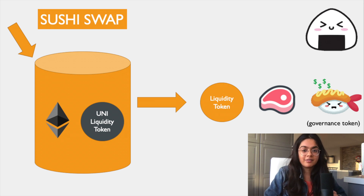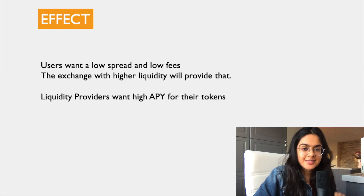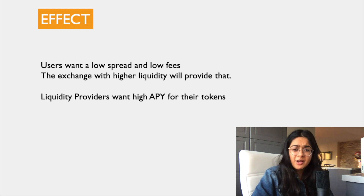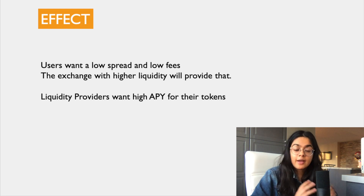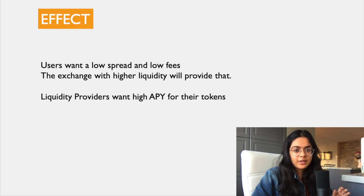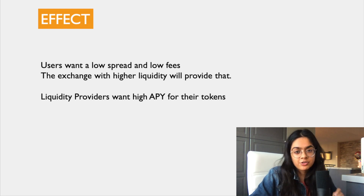People who were on Uniswap could easily migrate and use SushiSwap to get a higher rate of return, but their daily returns were just in Sushi. So if the price of Sushi goes down, they might have lost their revenue. The main incentive for a person selecting a decentralized exchange would be low fees and high volume, while for liquidity providers it would be high APY. Given all these factors, Sushi was looking very attractive for a while.